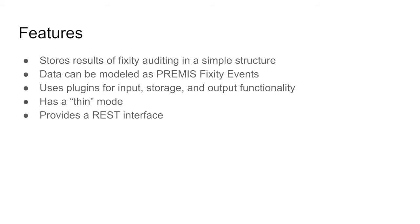Thin mode is an option where instead of recording every fixity event over years, you record only the most recent one and all of the failures. This is useful because over time fixity events can really pile up — you can have millions of fixity events in your database depending on how many objects are in your repository and how often you check. Thin mode keeps the total number of fixity events to a manageable level. If your preservation framework mandates recording every fixity check event over time, you have that option too, but you'll inherit a pretty large data management task in a few years.